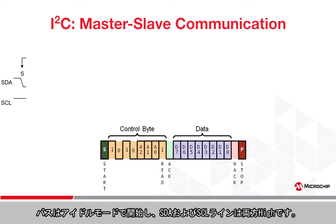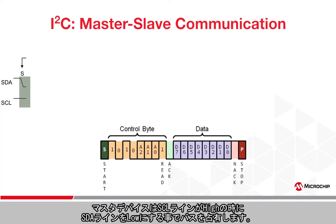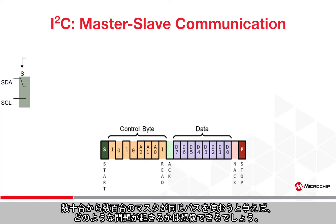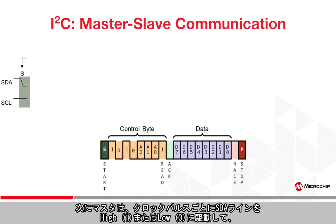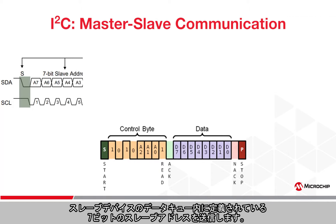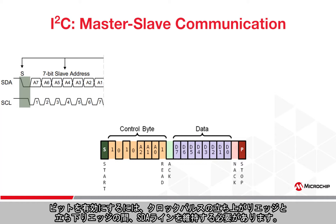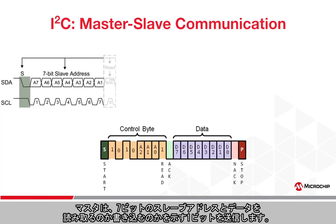The bus starts in idle mode as the SDA and SCL lines are both pulled high. A master device grabs the bus by pulling the SDA line low while the SCL line is still high. You can imagine how having tens to hundreds of masters vying for the same bus can introduce some difficulties. The master then sends a 7-bit slave address defined in the slave device datasheet by pulling the SDA line high or low on each clock pulse. For a bit to be valid, the SDA line must remain constant between the rising and falling edge of a clock pulse.